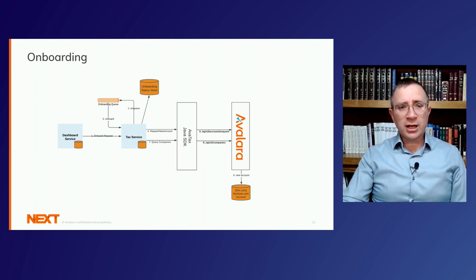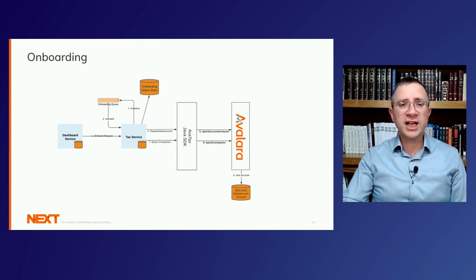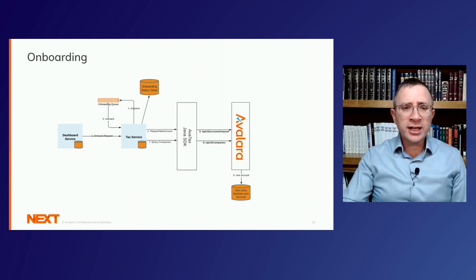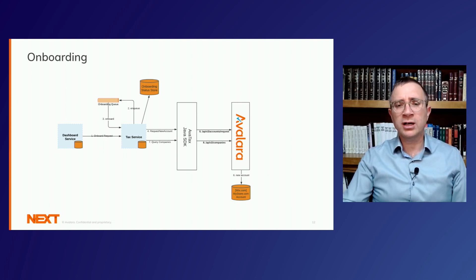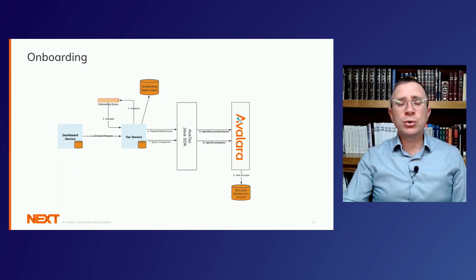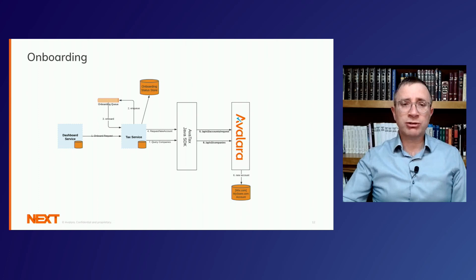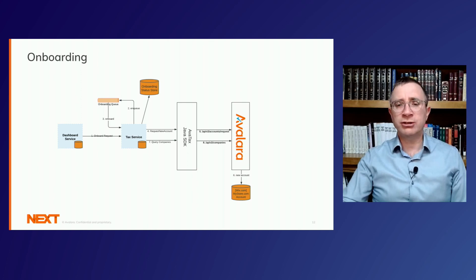The onboarding process, as we saw, can take up to 15 seconds, so we actually process these requests asynchronously. We put them into a queue and then workers take those requests off the queue and issue a request-new-account call to Avalara, where on behalf of our merchant we are creating a new account. This account gets saved in Avalara. After that, we make a call to query for the default company that's been created and save that company ID within our system. And after that, we create a default tax region and nexus for that newly created account as well.